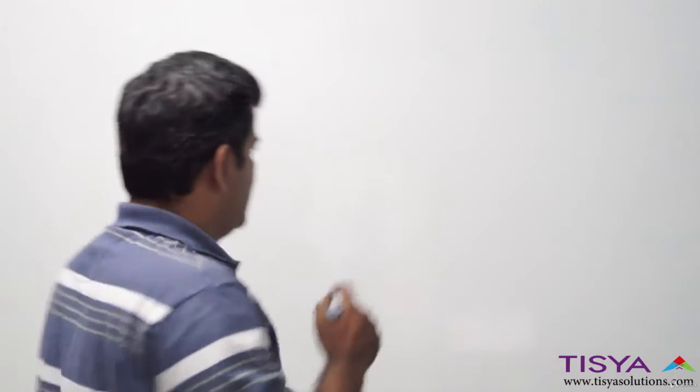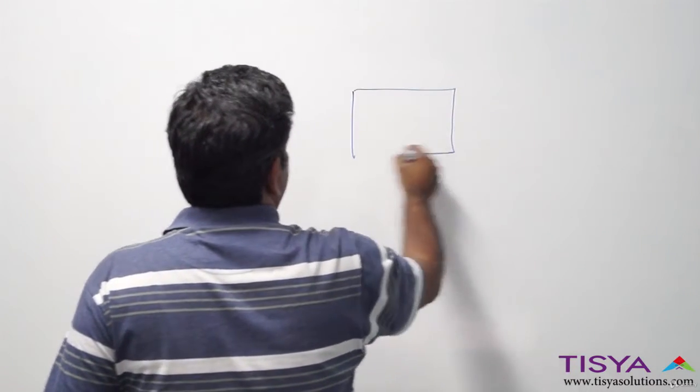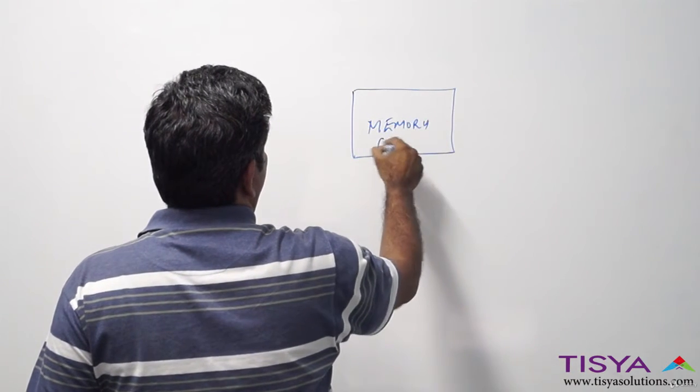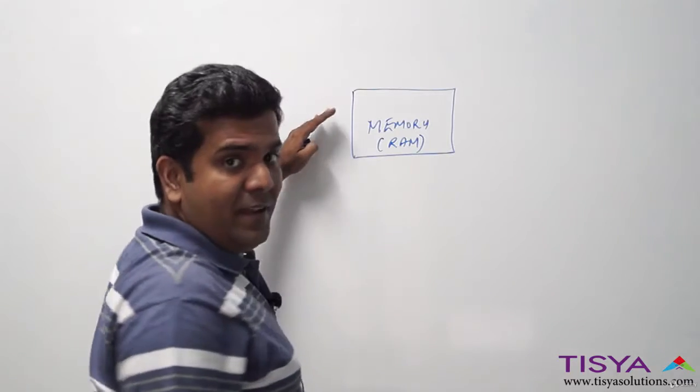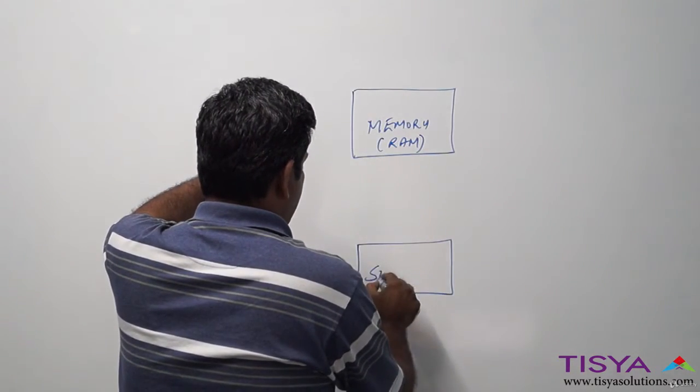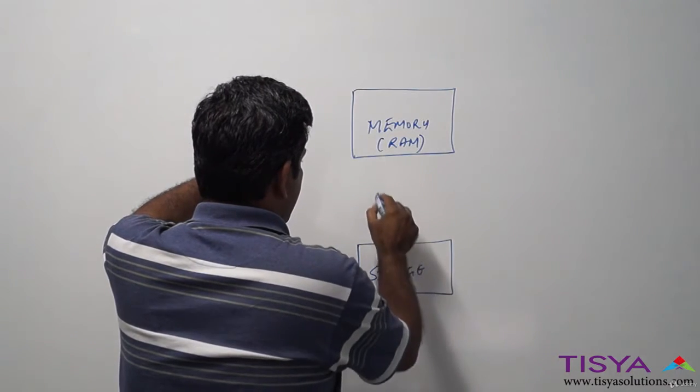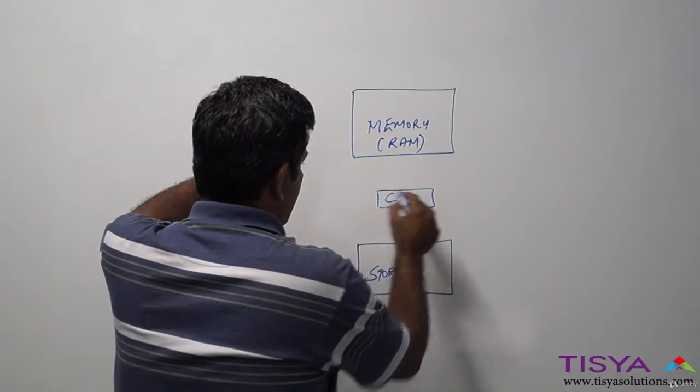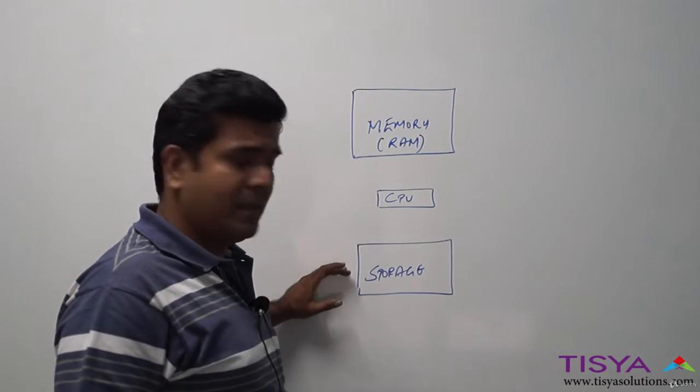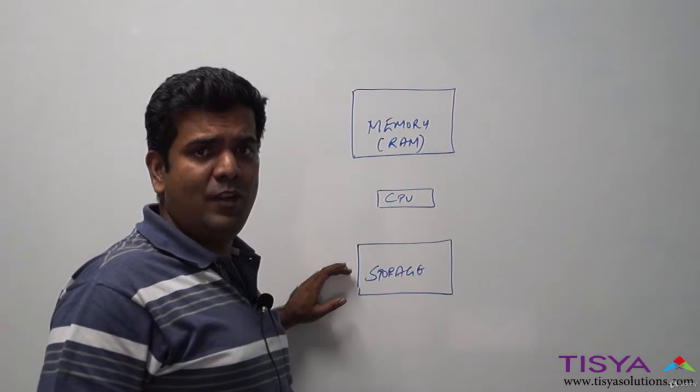There are many components but primarily there is memory or RAM, CPU, and storage. Depicting it on the board, we have memory, storage, and the processor. These three resources are primarily used when you do any computing.